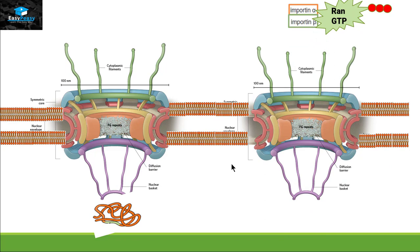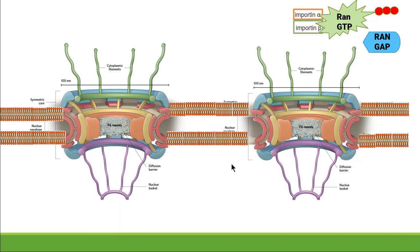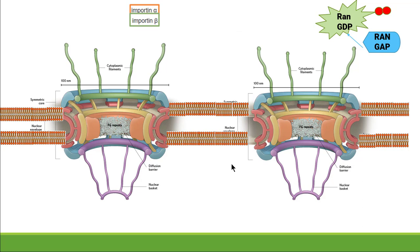Importin needs to get detached from RAN-GTP. To do that, we have another protein called RAN-GAP. RAN-GAP hydrolyzes RAN-GTP into RAN-GDP by removing one phosphate group. This way, importin can no longer attach itself to RAN-GTP and becomes available to carry the next protein into the nucleus.